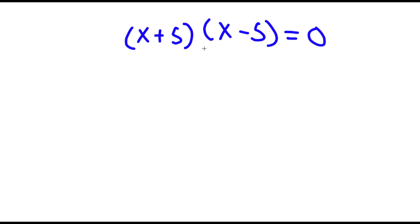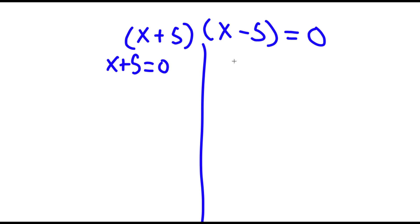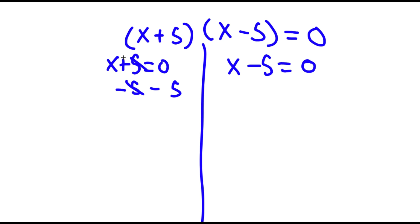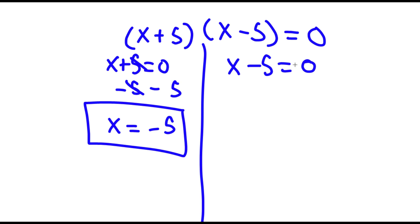Now from this I have two equations: x plus 5 is equal to 0, and x minus 5 is equal to 0. Let's first start with x plus 5 equals 0 — simply subtract 5 on both sides, these two cancel out, and I'm left with x is equal to negative 5. And now if x minus 5 equals 0, I can add 5 on both sides, and I'm left with x is equal to 5.